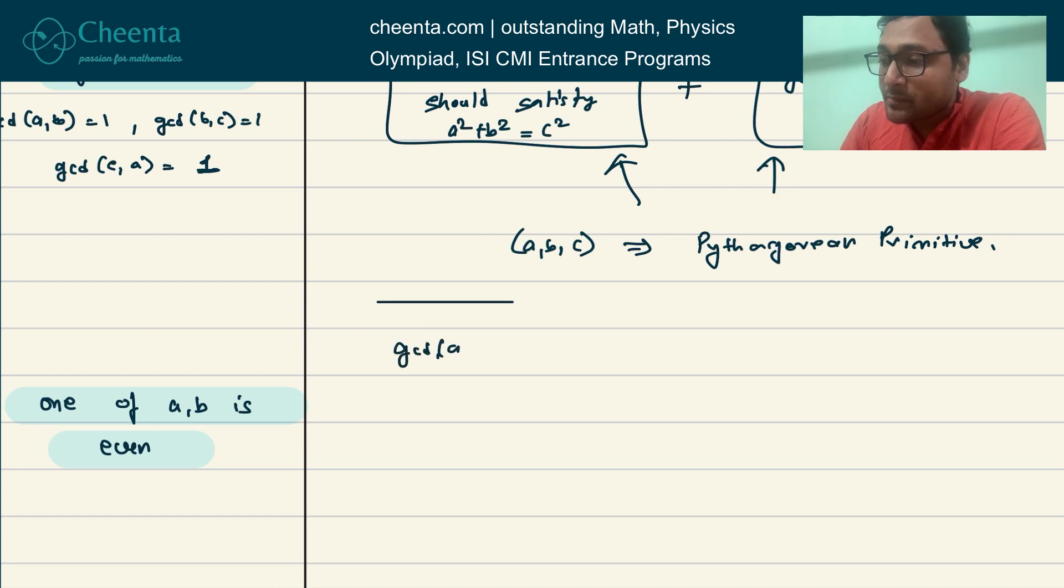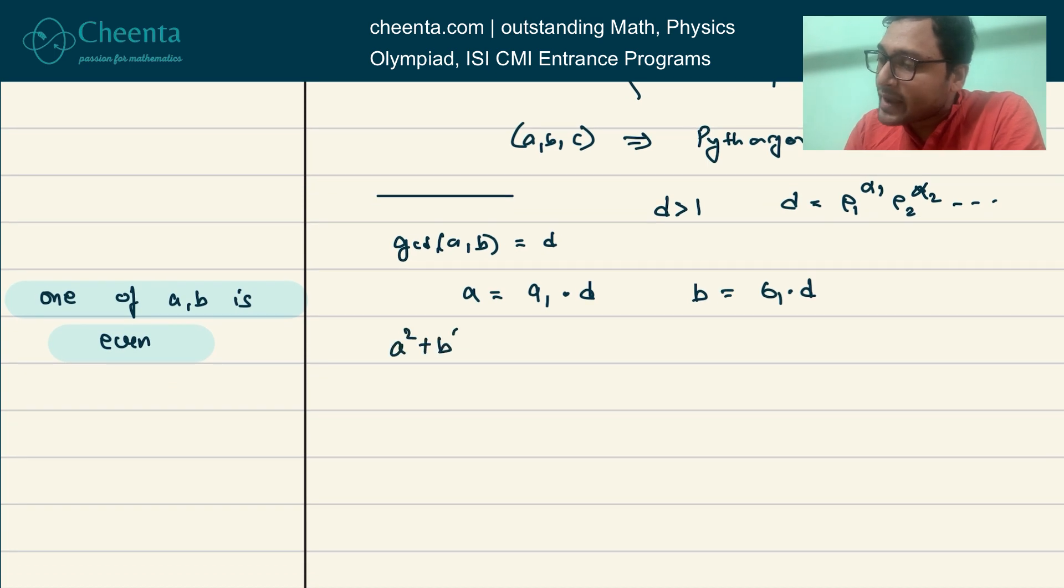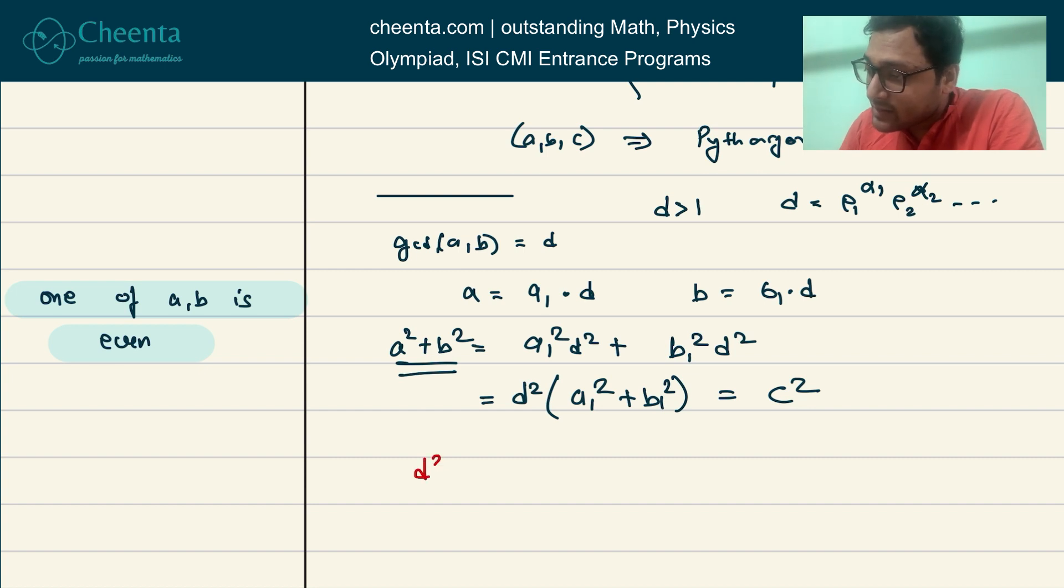Suppose GCD of A, B is D, some number D which is greater than 1. Then D will have a prime factorization: P₁^α₁, P₂^α₂, etc., where P₁, P₂ are prime numbers. It could be just one prime number. Now I can write A = A₁×D and B = B₁×D because D divides both of them. So A² + B² = A₁²D² + B₁²D² = D²(A₁² + B₁²). Since it's a Pythagorean triple, A² + B² = C², which means D² divides C².